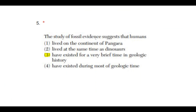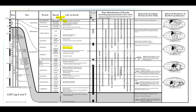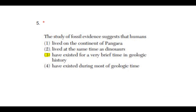Number five: the study of fossil evidence suggests that humans — the answer is three — have existed for a very brief time in geologic history. If you look at pages 8 and 9 again, you'll see that humans only existed for a very short period of time, only about 1.8 million years ago compared to the entire history of life on Earth. Earliest dinosaurs were around the Middle Triassic, a long time before humans existed, so that's why it's not number two.